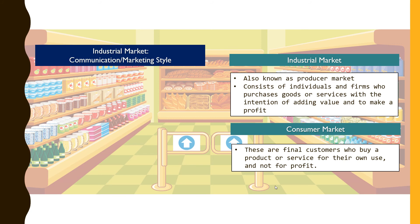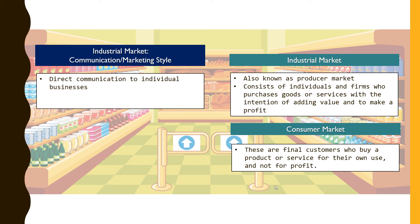Now there are different ways involved in terms of communicating or marketing products of the industrial market. It's usually in the form of direct communication to individual businesses, or in terms of pamphlets and business magazines where businesses are able to find out how to buy items from these industrial markets, such as the biscuits we were talking about.